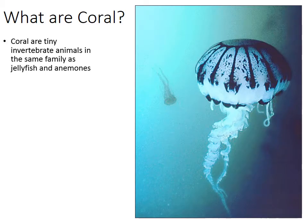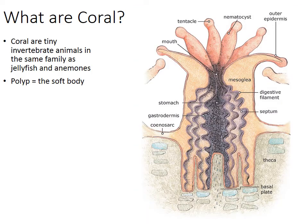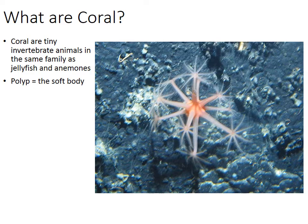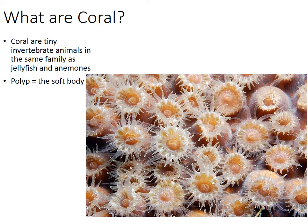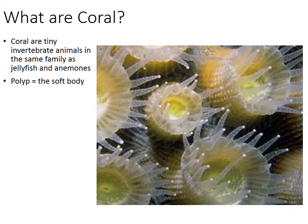Coral are tiny invertebrate animals in the same family as jellyfish and anemones. They have a very soft body, which we simply call a polyp. Many times the polyp is hidden inside of the shell that they produce. Looking at this picture, we can see the polyp exposed — here are about a dozen individual polyps of coral, and zooming in closer we see four or five individual polyps.